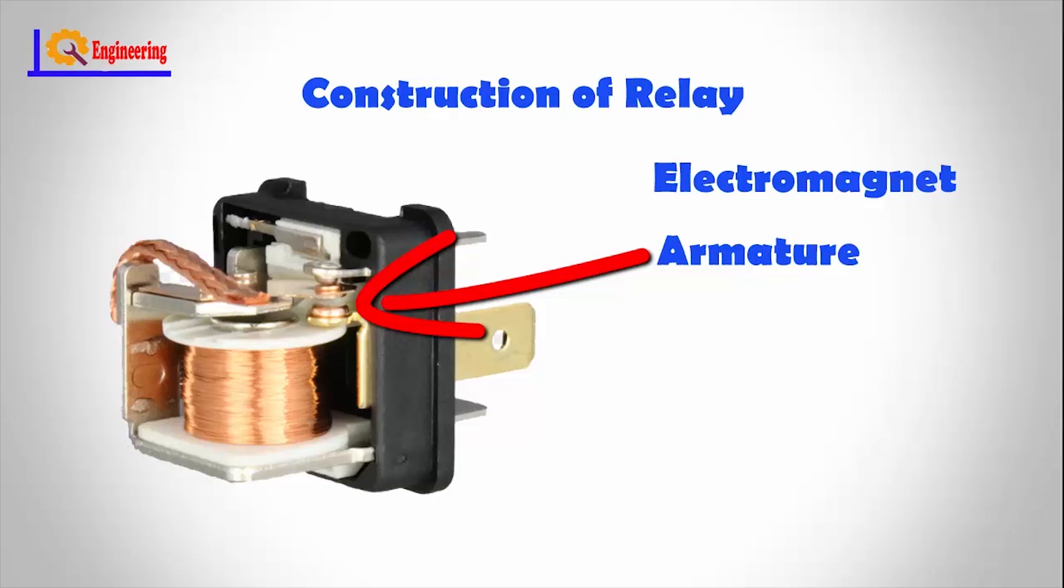Number 3: Spring. When no current flows through the coil electromagnet, the spring pulls the armature away so that the circuit cannot be completed.